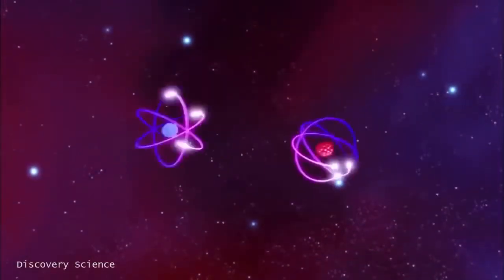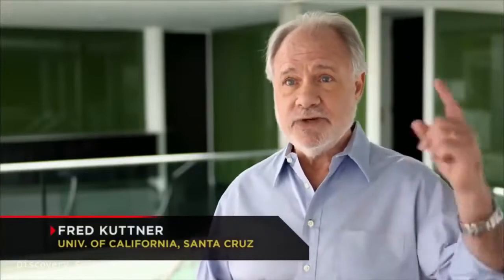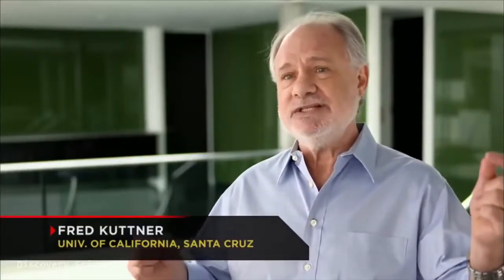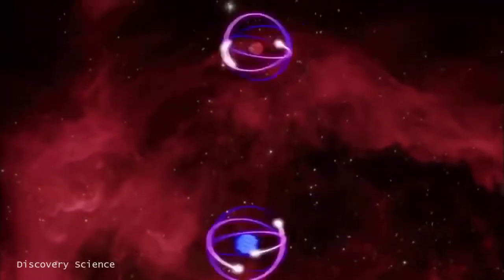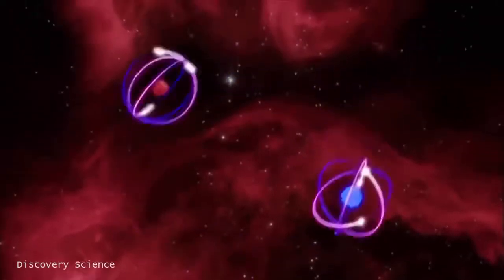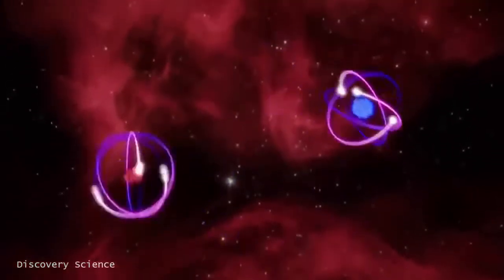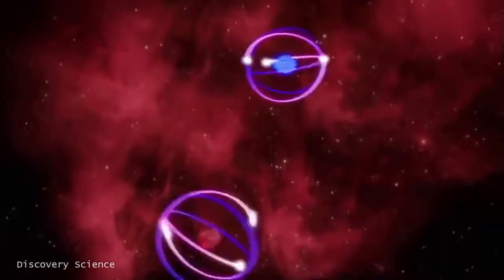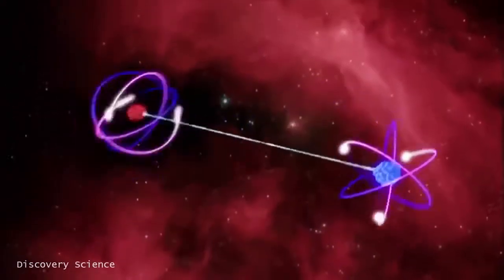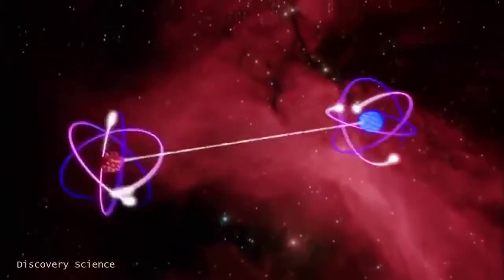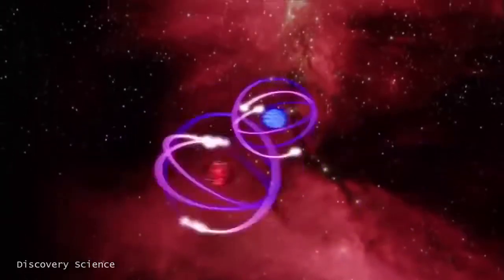In quantum physics, what happens to an object over here can instantly affect an object over here, and over here could be millions of miles away. This is how it works. When two subatomic particles interact, they can become entangled. That means their spin, position, or other properties become linked through a process unknown to modern science.